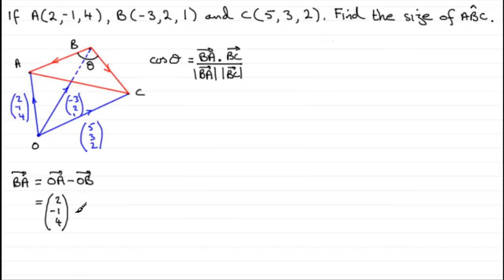And then we've got to subtract the column vector OB, which is (-3, 2, 1). What do we get if we work this out? We get 2 minus -3 which is 5, -1 minus 2 which is -3, and 4 minus 1 which is 3.